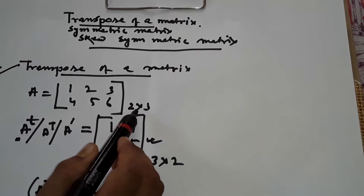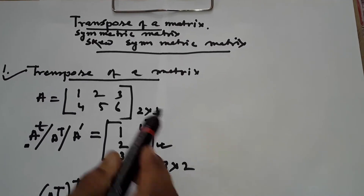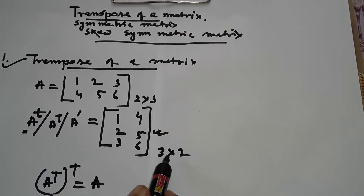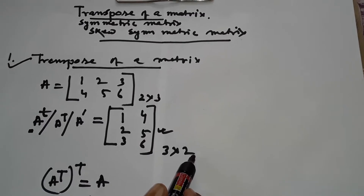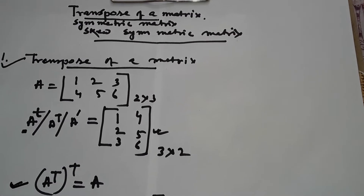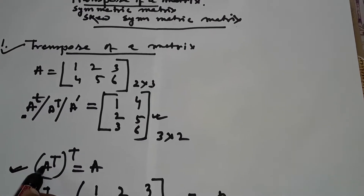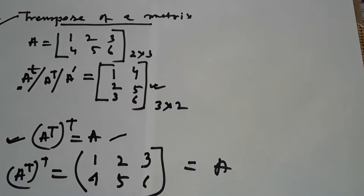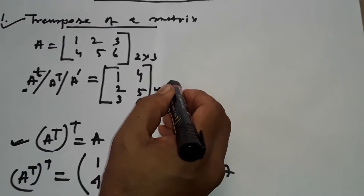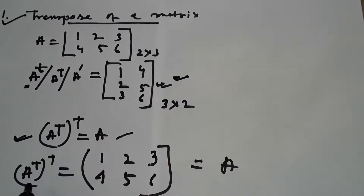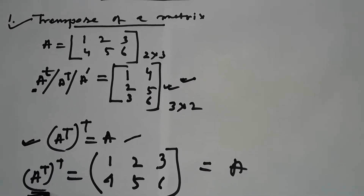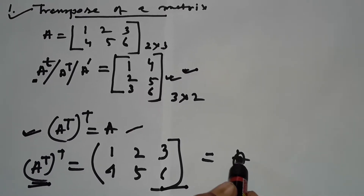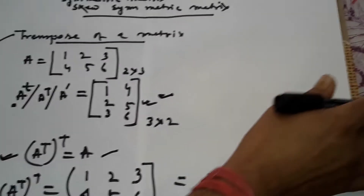The order of the original matrix is 2 into 3, and the transpose has order 3 into 2. One property of transpose of a matrix is: A to the power T, whole T, equals A. That is, if you transpose A^T again, it becomes the original matrix.